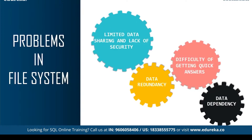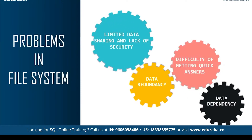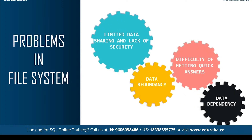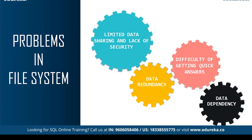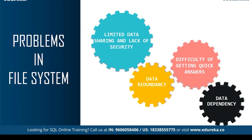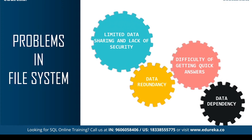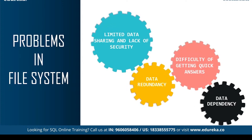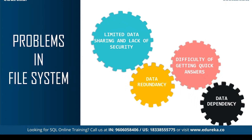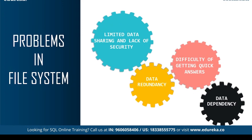Let's look at some of the problems of file system. The first problem is data redundancy. When we store similar data in different locations of our computer, data gets duplicated, and this leads to data redundancy. This increases the storage size and also leads to failure of security features. Because of this, the file system is highly vulnerable in nature. Data redundancy costs the user not only in terms of security, but also economically.